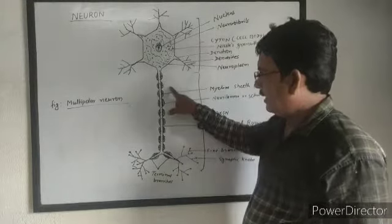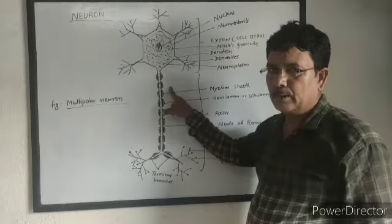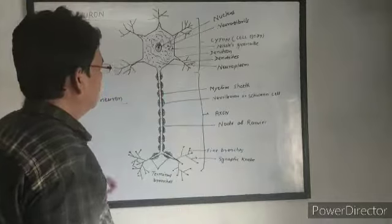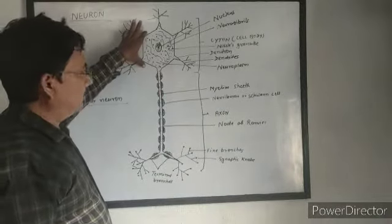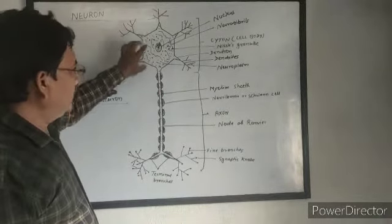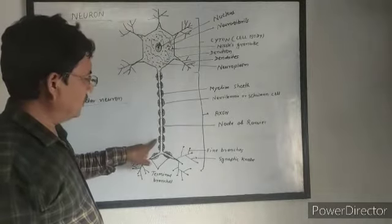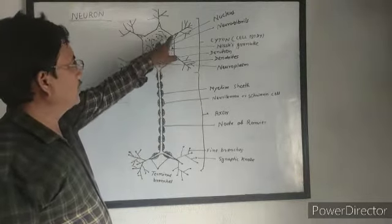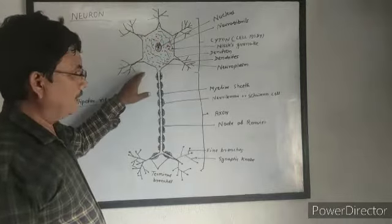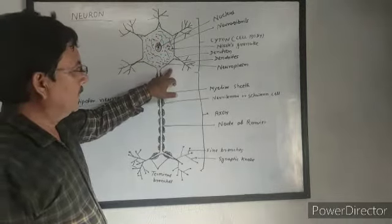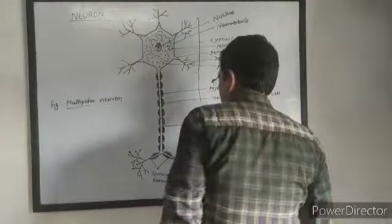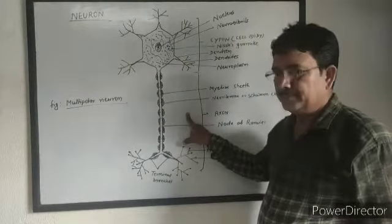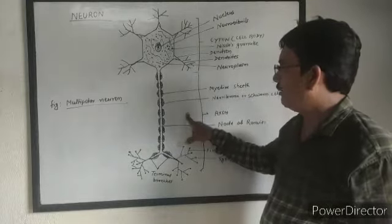Here is the figure of a multipolar neuron. A multipolar neuron is that type of neuron in which there is a cell body called cytone, from which a long process arises called the axon, and numerous small processes arise from the cytone which are called dendrons. We will study the multipolar neuron and the function of a neuron — how it functions.